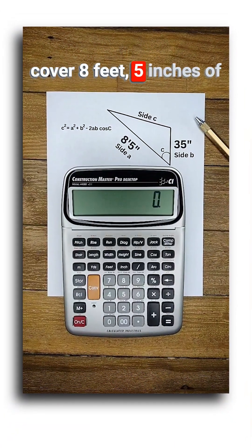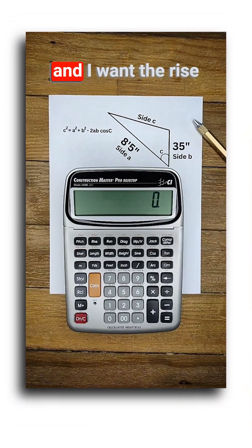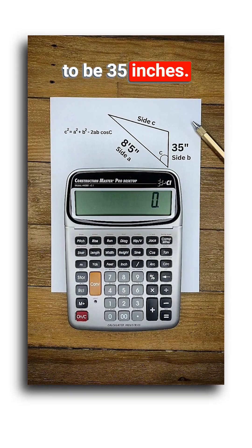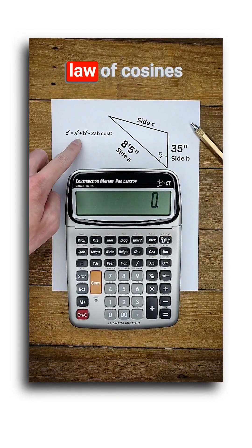I want the dormer to cover 8 feet 5 inches of the main roof section and I want the rise to be 35 inches. Now this isn't a right triangle, so I'll use the law of cosines.